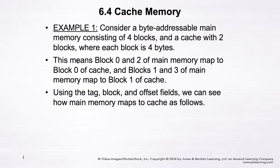This means that block zero and block two of main memory will map to block zero of the cache, because x equals zero or two, mod two equals zero. Block one and block three of main memory will map to block one of the cache, because x equals one or three, mod two equals one.